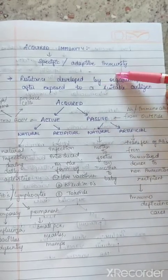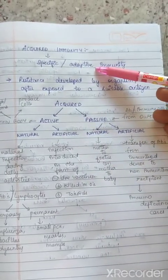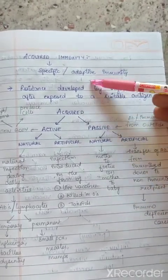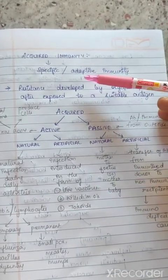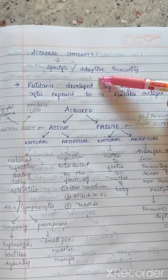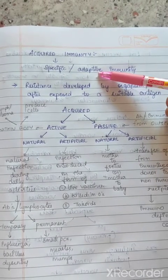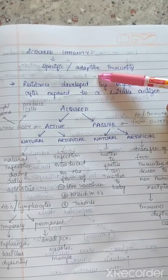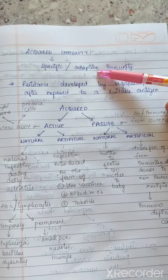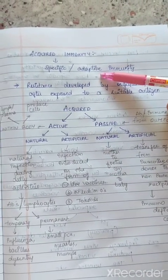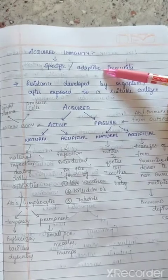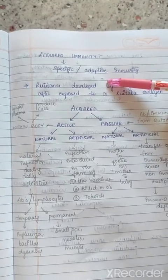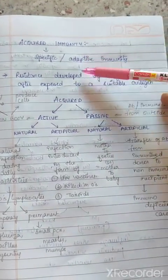Why is it known as adaptive immunity? Because this is not coming from birth itself. It is acquired with the help of the antigen which enters into the body. For example, if the influenza virus enters the body, antibodies against influenza virus will be developed. So if the same virus enters a second time, those antibodies will fight against it — that is why it is called adaptive immunity.